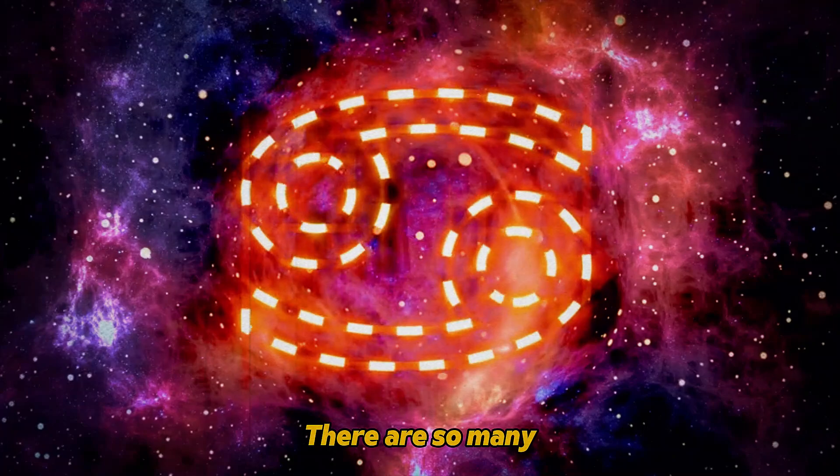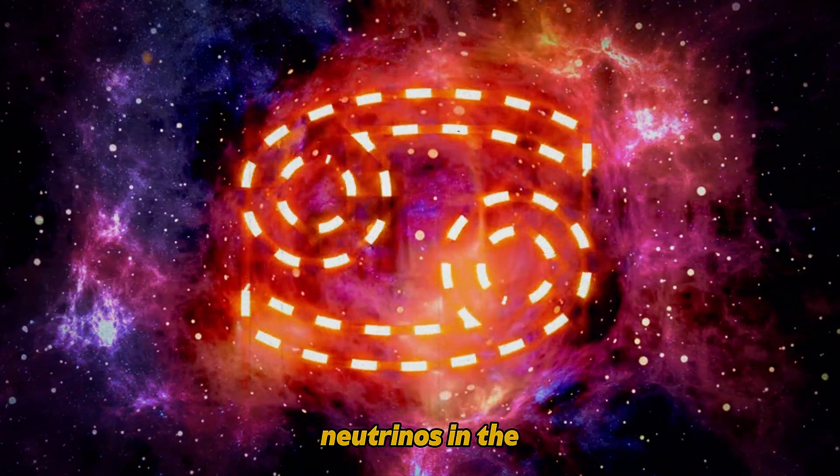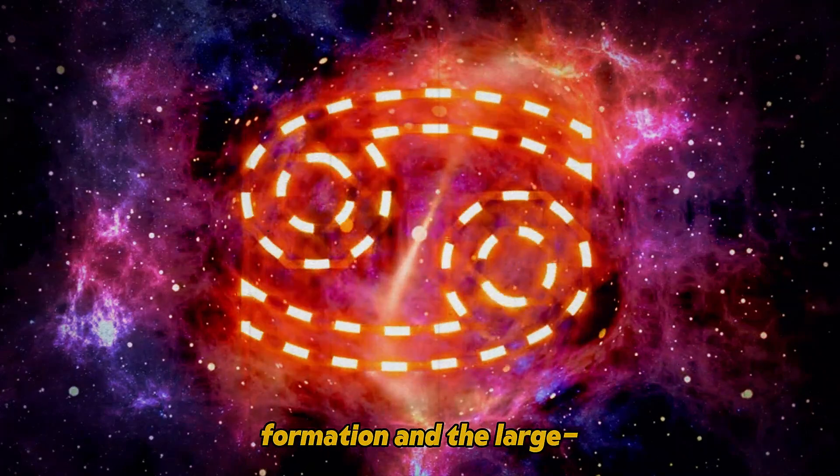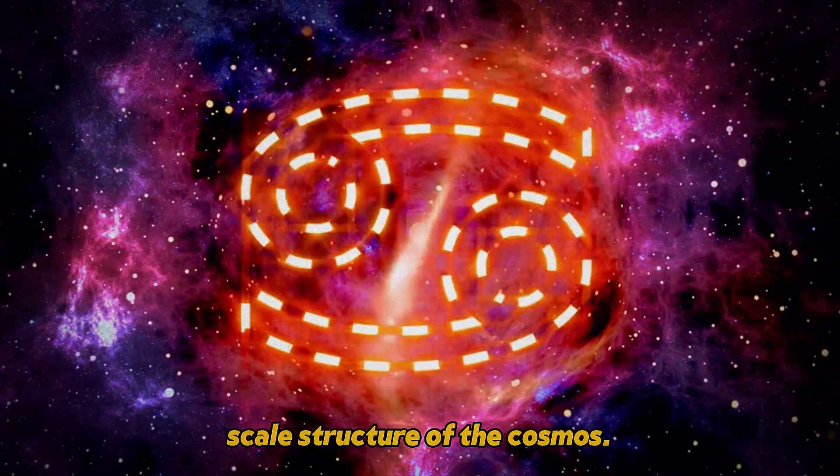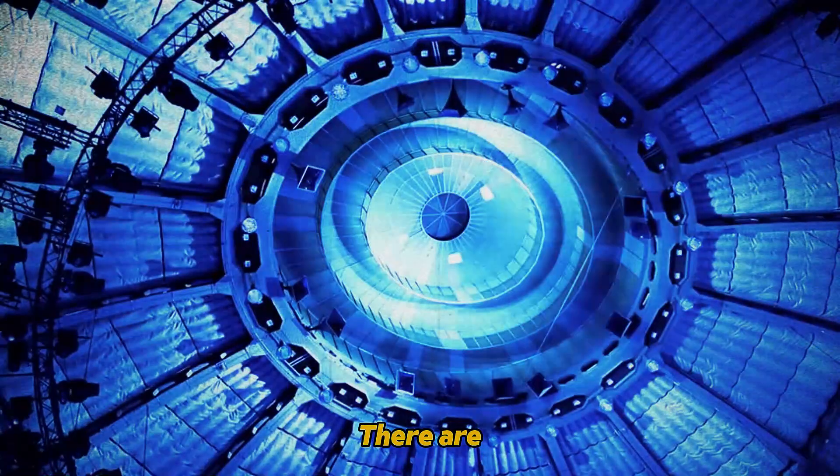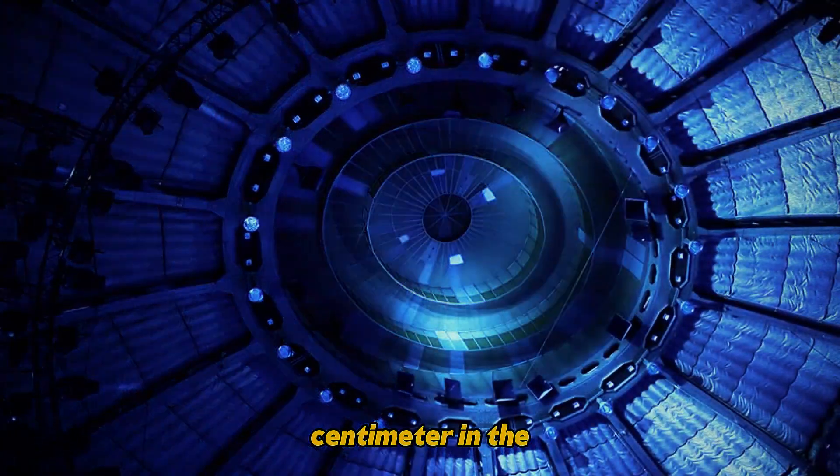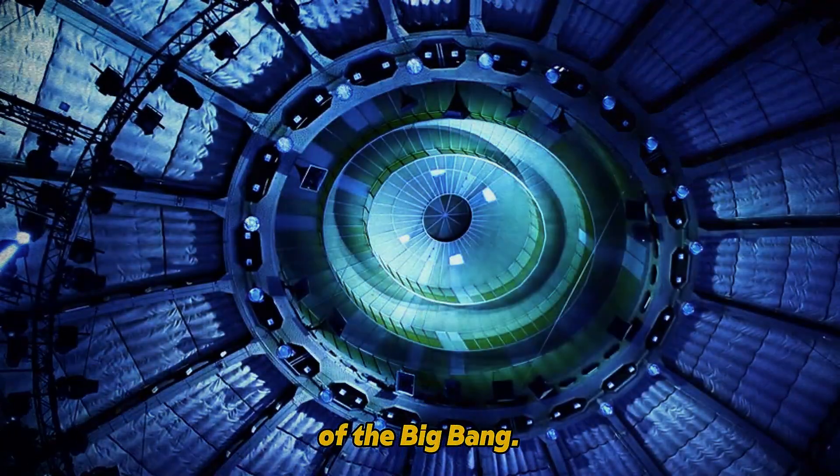There are so many neutrinos in the universe that, despite their tiny mass, they can influence galaxy formation and the large-scale structure of the cosmos. There are approximately 340 neutrinos per cubic centimeter in the universe, a legacy of the Big Bang.